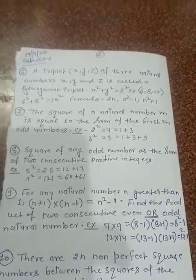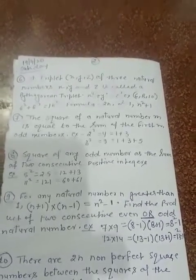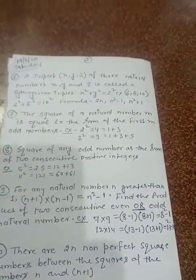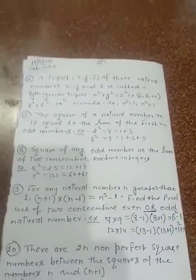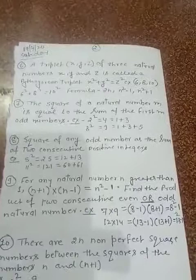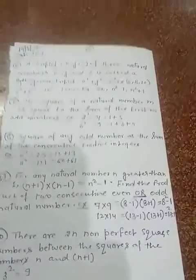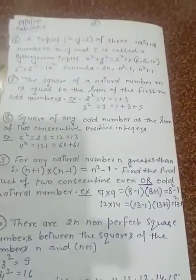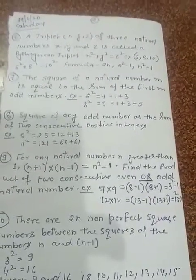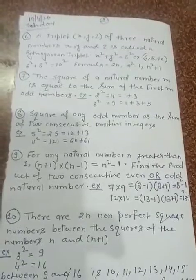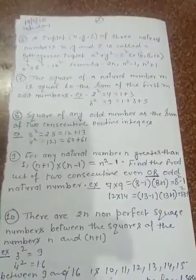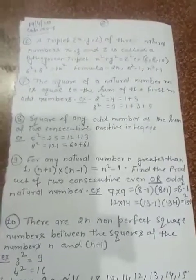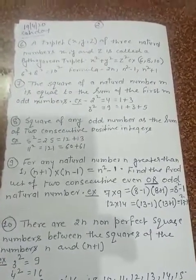Now, property number 9. For any natural number n greater than 1, (n + 1)(n - 1) = n² - 1. Here we use the formula a² - b² = (a + b)(a - b). Find the product of two consecutive even or odd natural numbers.